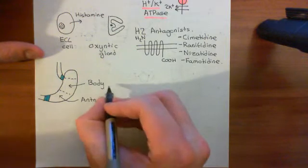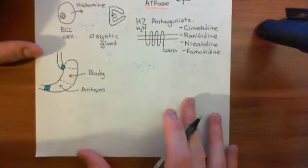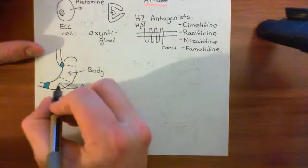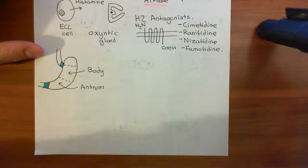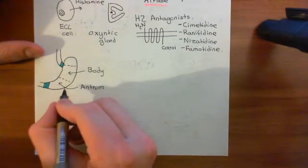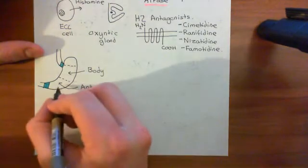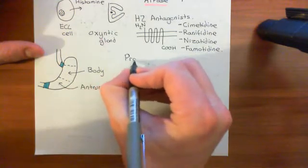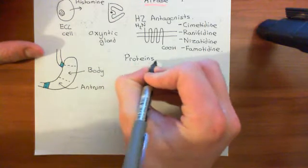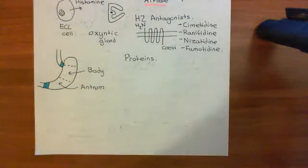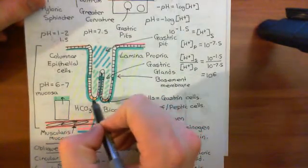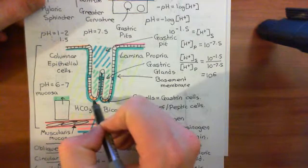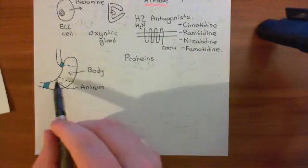So what we want to see is how this all works. Basically, if you just eat a meal, then in that meal there will be proteins. Proteins can stimulate G cells in the antrum to secrete gastrin. What will happen is proteins will come into the antrum and they will migrate their way right down to the base of the gastric gland, stimulating the G cells right at the base of the gastric gland — and this is occurring in the antrum of the stomach.